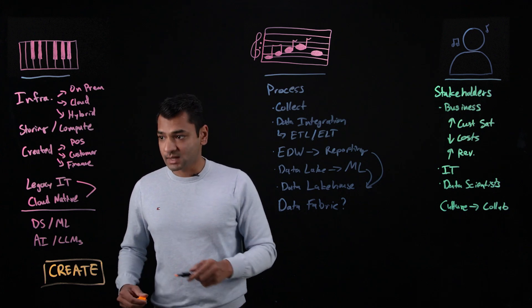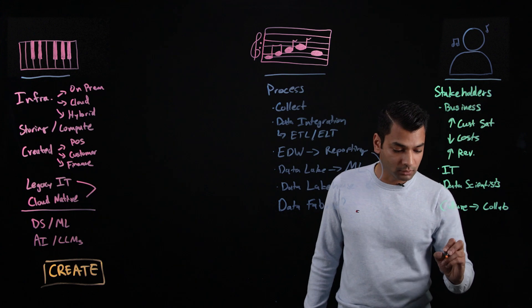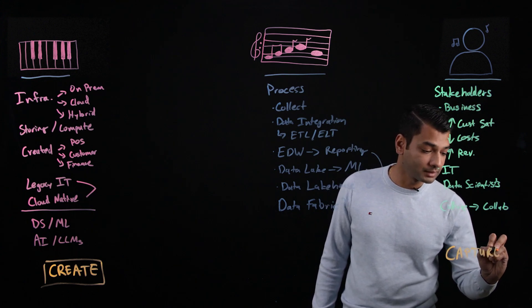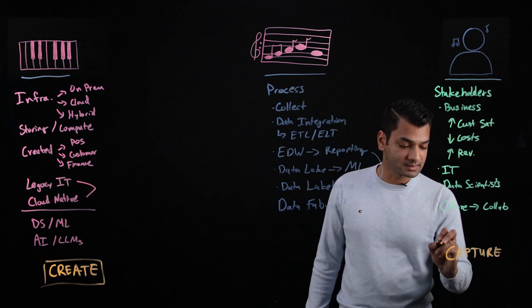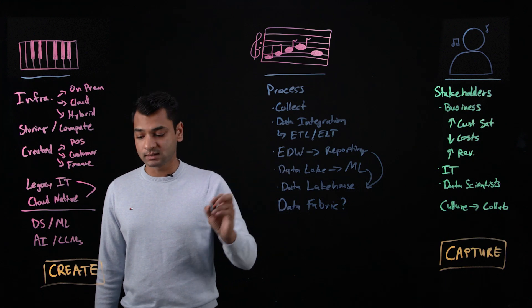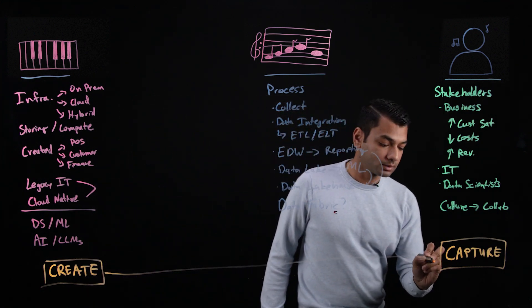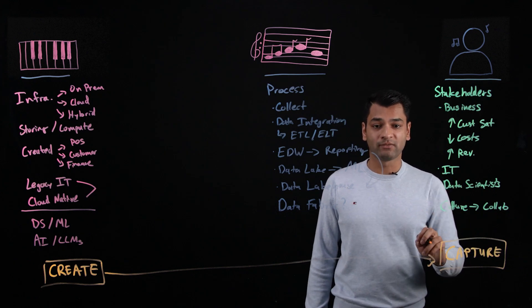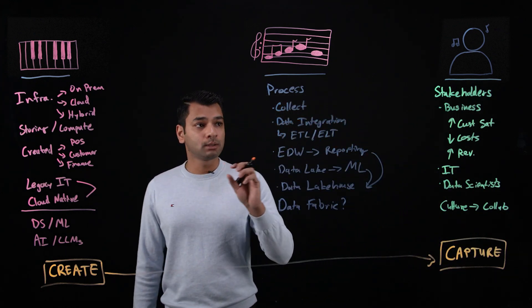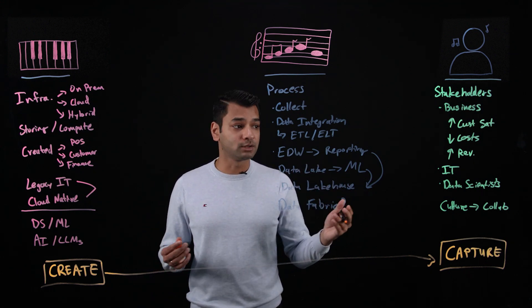We said technology stacks create data, but business users and different stakeholders capture that value using this process. Technology tools and processes create value, but our users and the business captures that value. You need all three—technology, process, and people—to create the symphony that you want to create with your data in your enterprise.